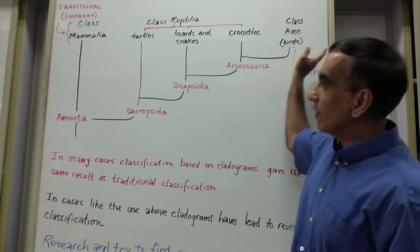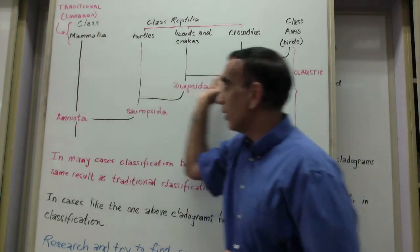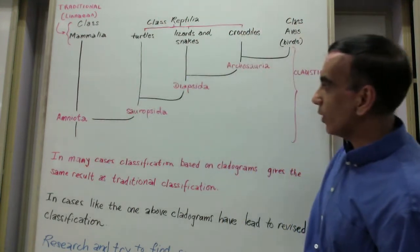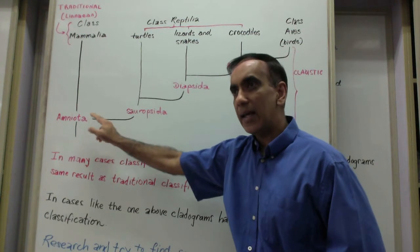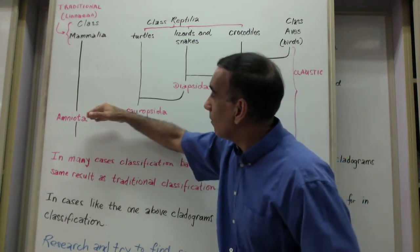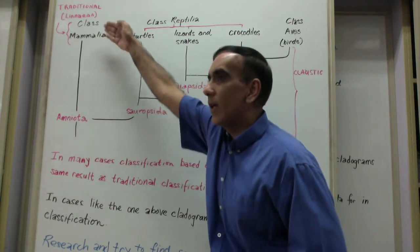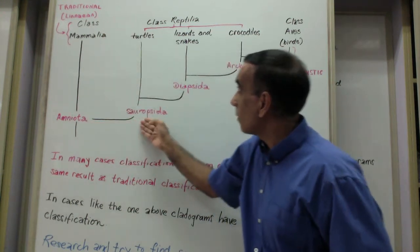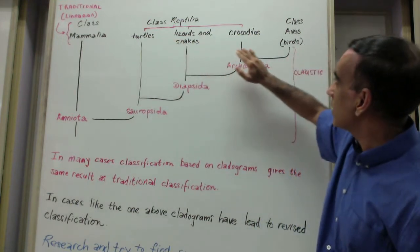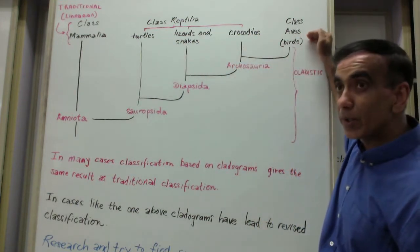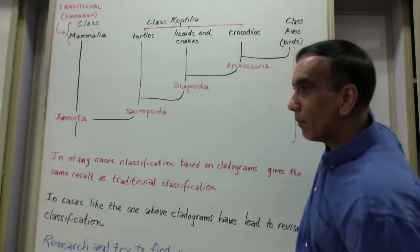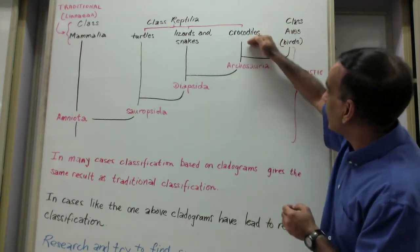Using cladistics, this traditional classification would be revised to place all of the groups with this one common amniotic egg ancestor, the Amniota. The Mammalia branches off at this point, with the Sauropsida including the turtles, lizards and snakes, the crocodiles, and the birds. At the end of this cladogram we see that the crocodiles and the birds form the group Archosauria.